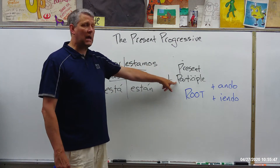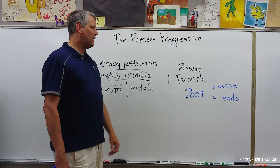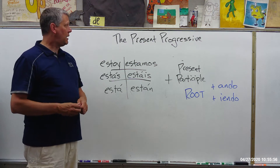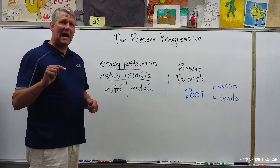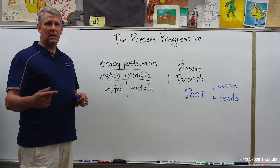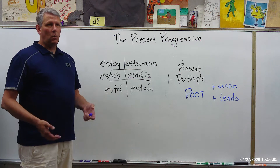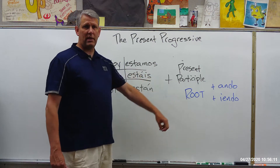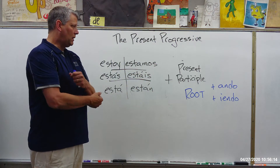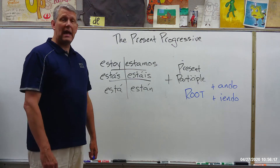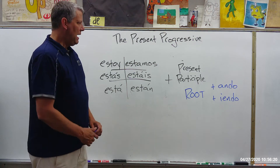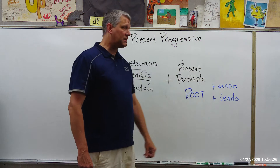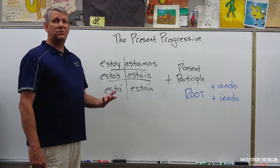Then we have to use what's called a present participle. The present participle in English — using present progressive tense — is the -ing form of the verb: running, jumping, studying, working. In Spanish, we take the root of the verb. For example, 'estudiar' — we drop the AR, we're left with 'estudi', and because it's an AR verb, we add A-N-D-O. So the present participle of 'estudiar' is 'estudiando'.